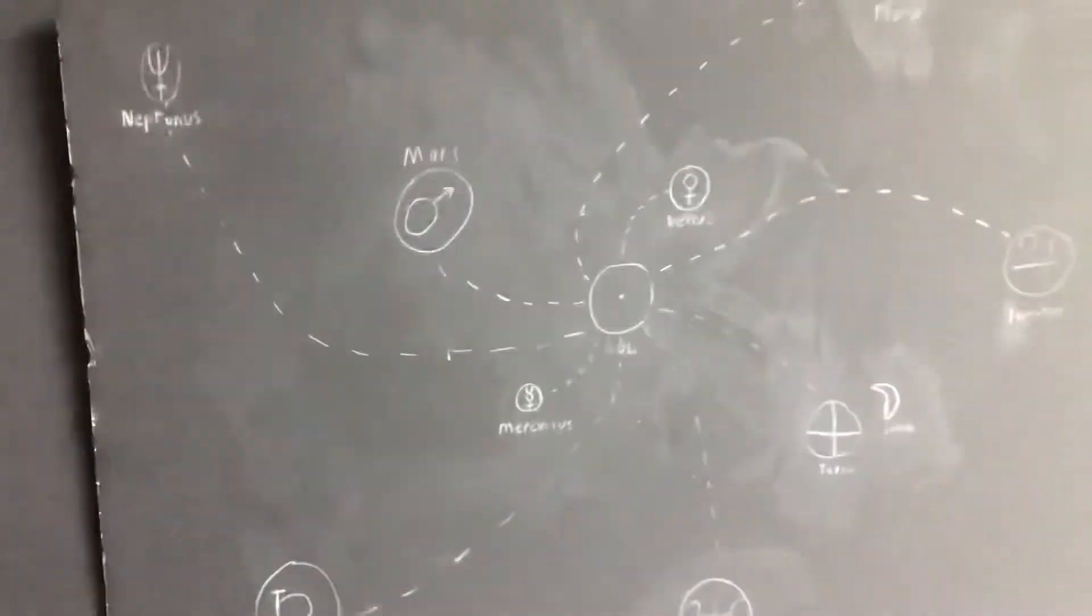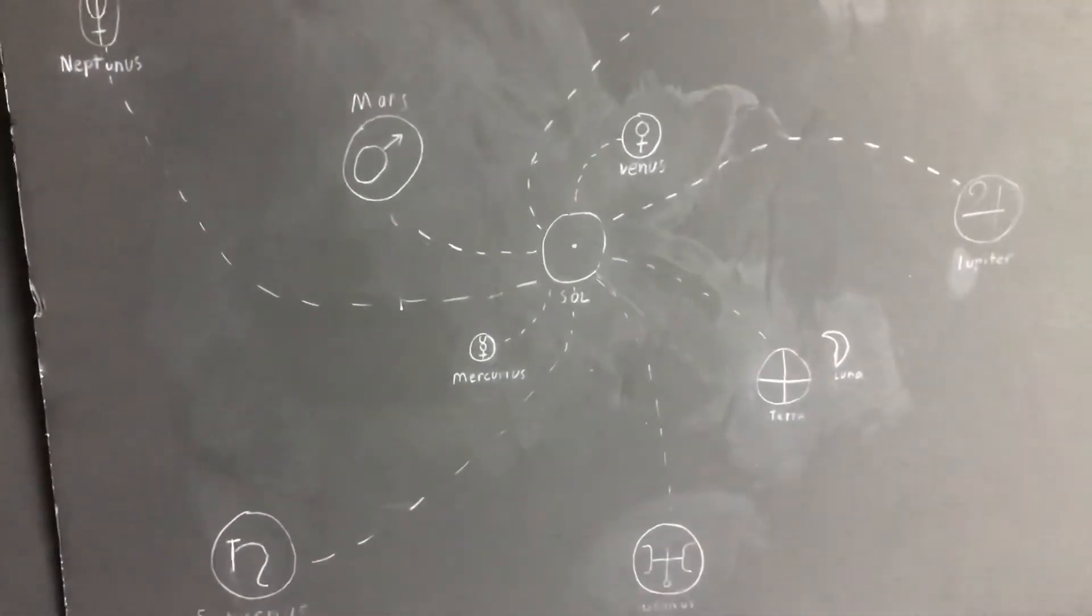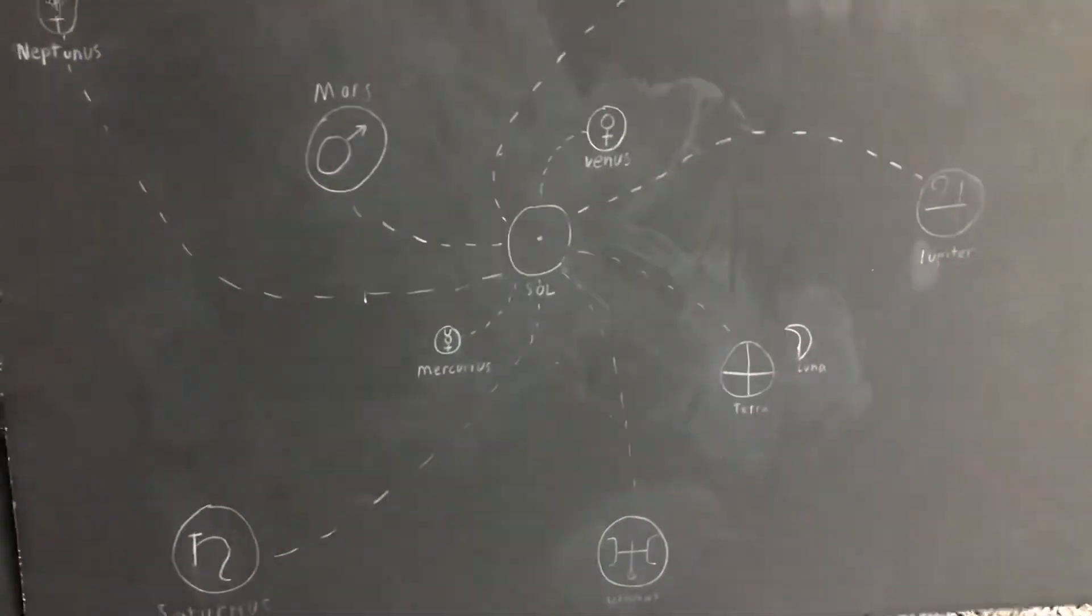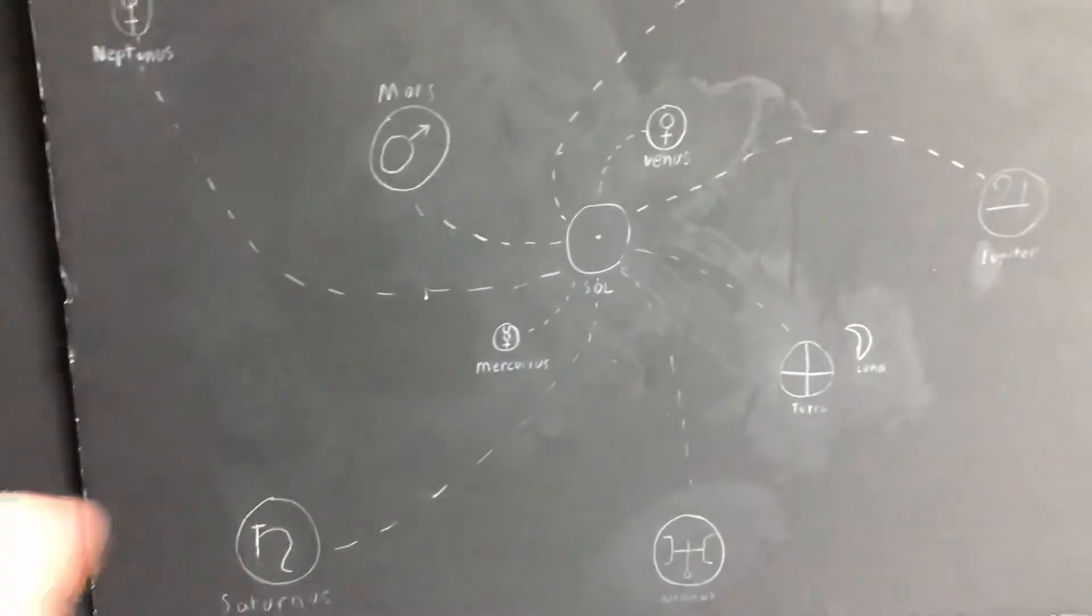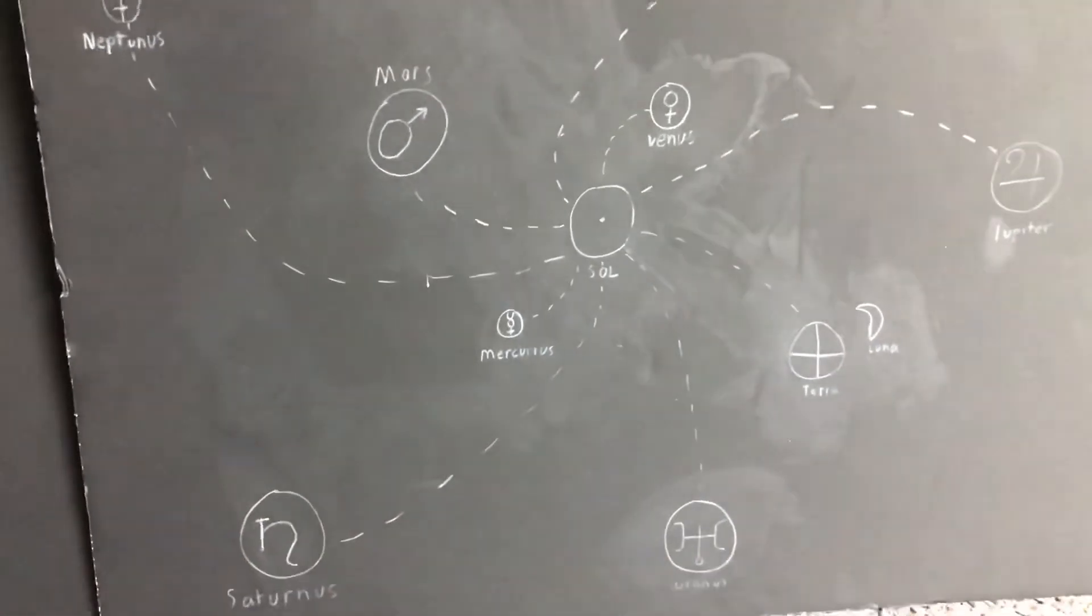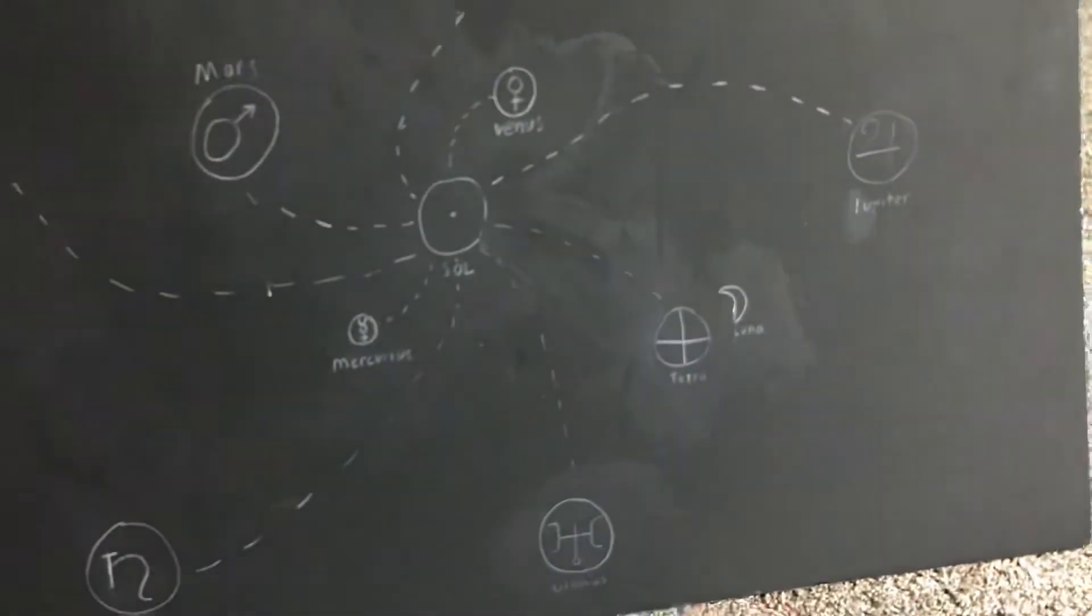So you cannot say these planets don't, like Mars doesn't have a magnetic field. It has a weak magnetic field, sure, compared to the earth. But it still has a magnetic field. They all do. Everything does. Everything that's existing. A speck of dust has a magnetic field around it. Just because it's so small, we don't equate it to what we think of as a magnetic field like earth.